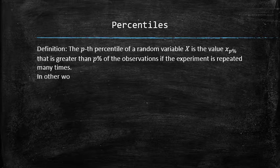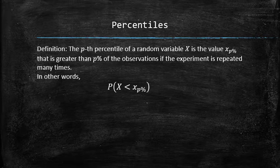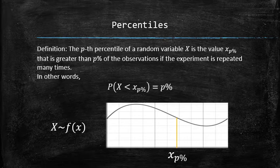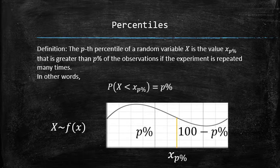In other words, the following probability statement is true. We can visualize the pth percentile of x by considering its probability density curve and finding the value, the area to the left of which is p% of the total area.